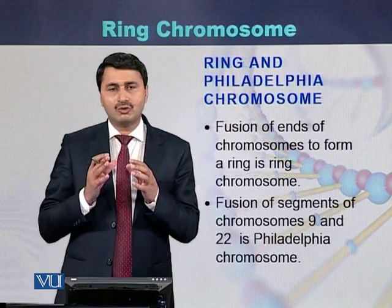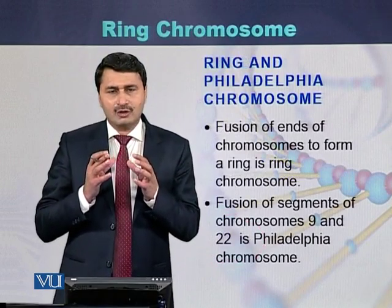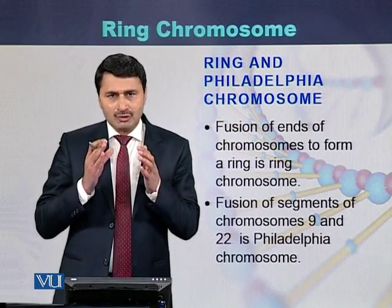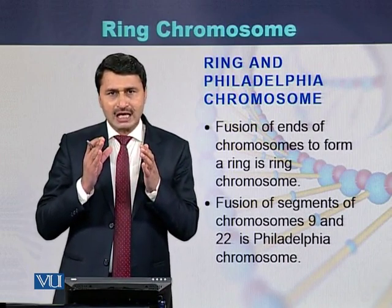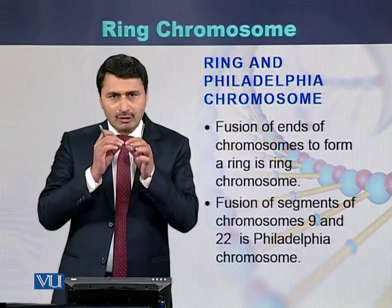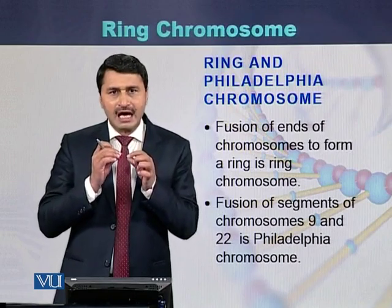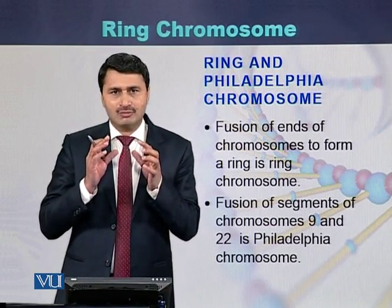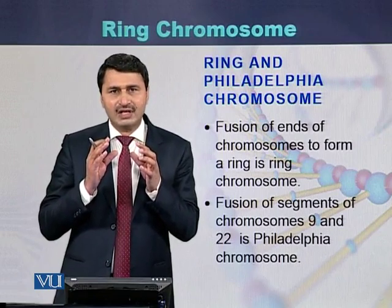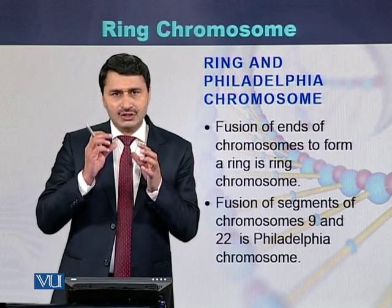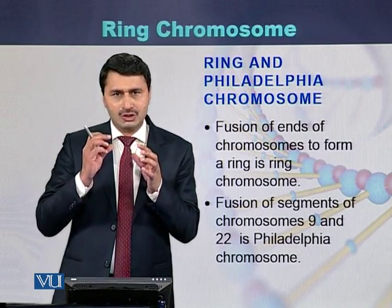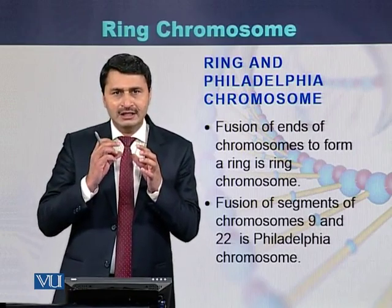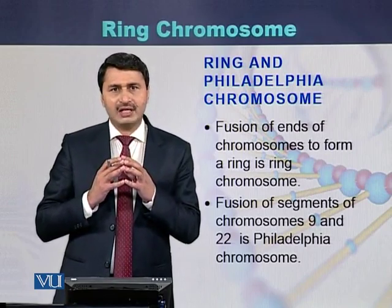In summary, a ring chromosome is one in which both ends (telomeres) are deleted and the chromosome converts into a ring shape. In the Philadelphia chromosome, a small fragment from the telomere of chromosome 22 is deleted and attached to the telomere of chromosome 9, forming the Philadelphia chromosome.